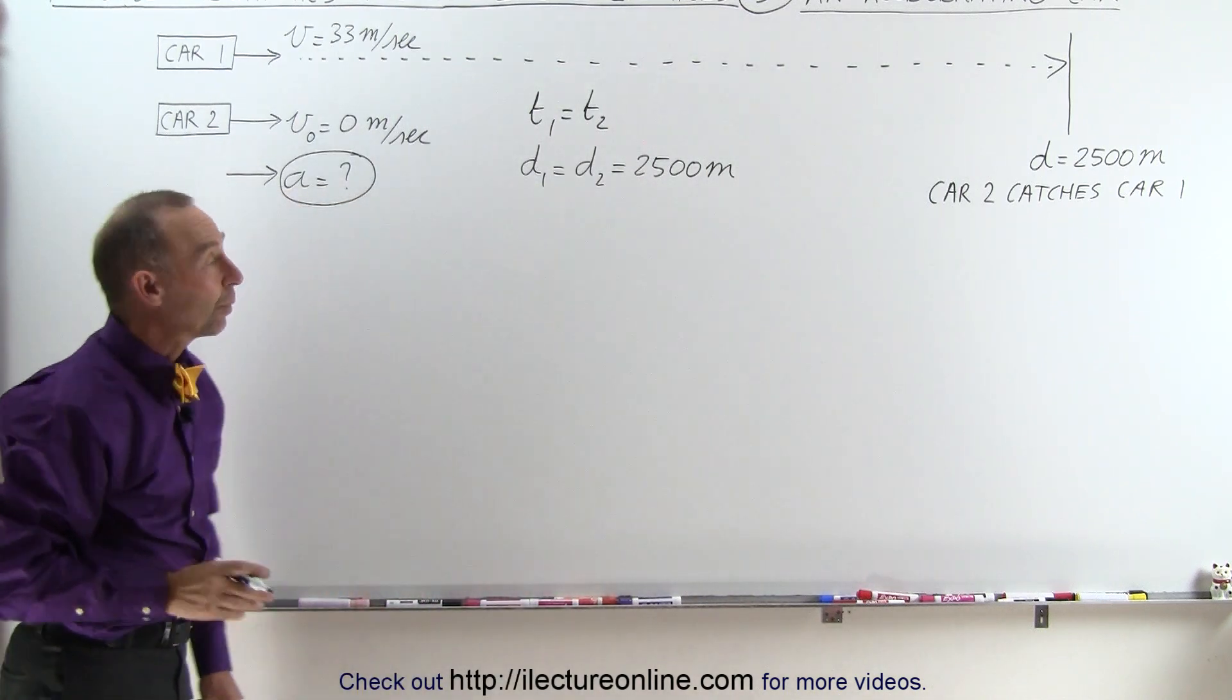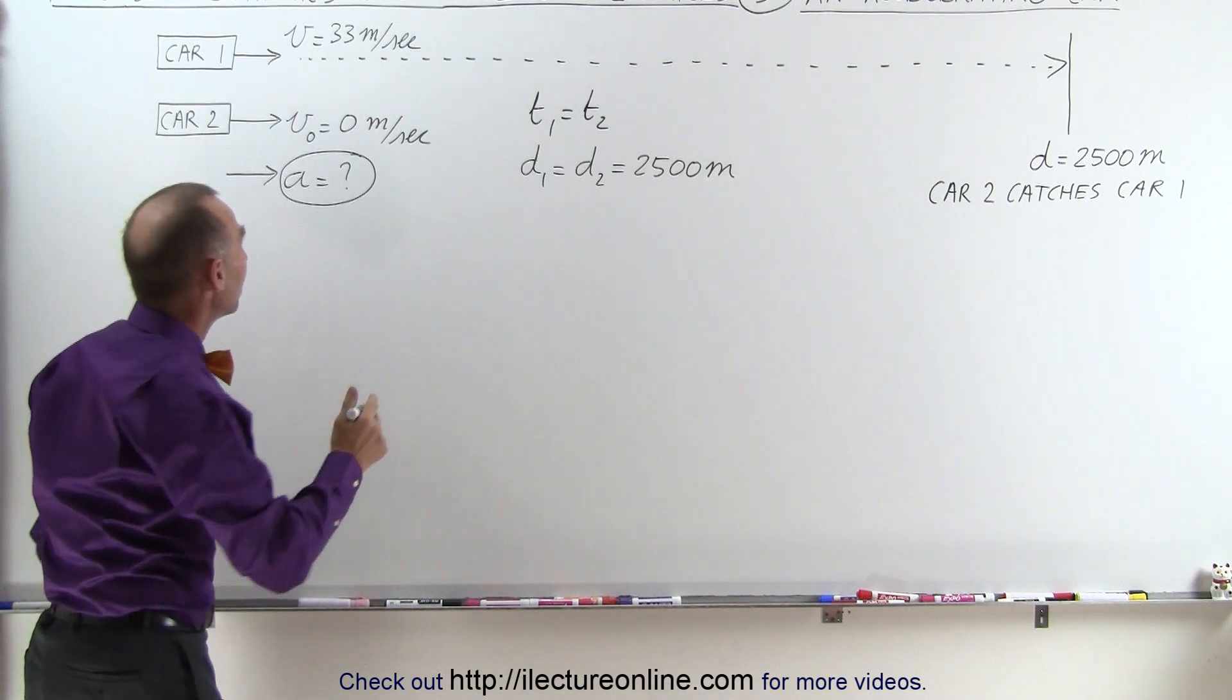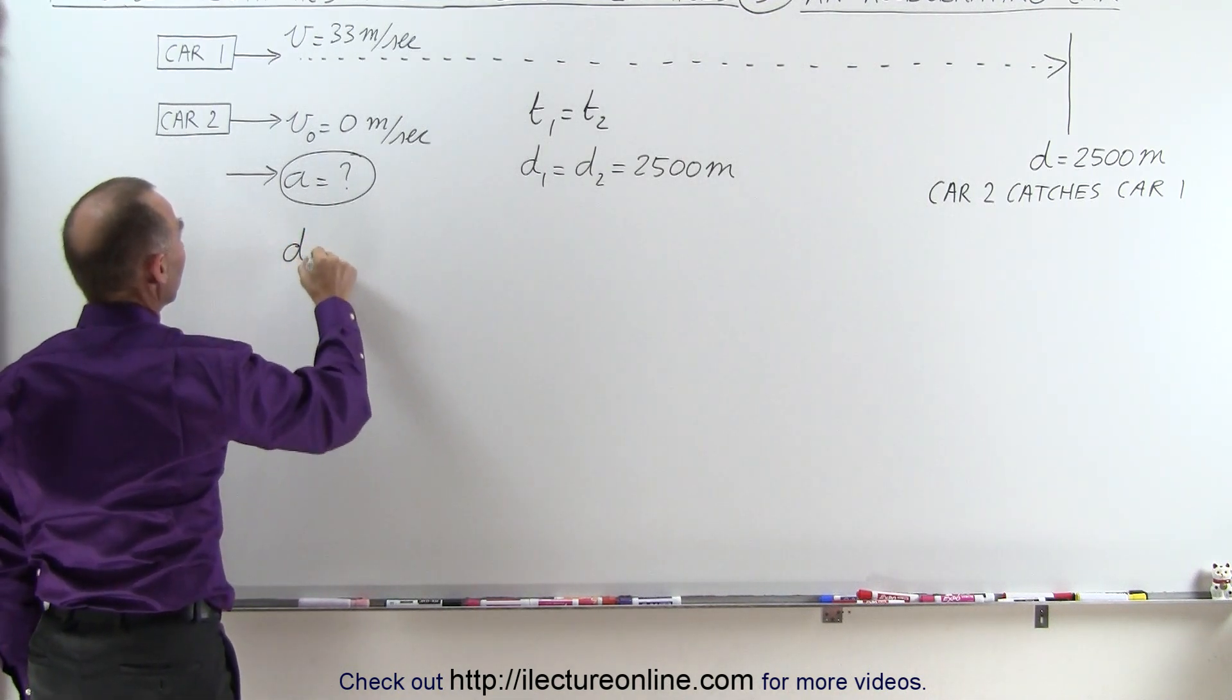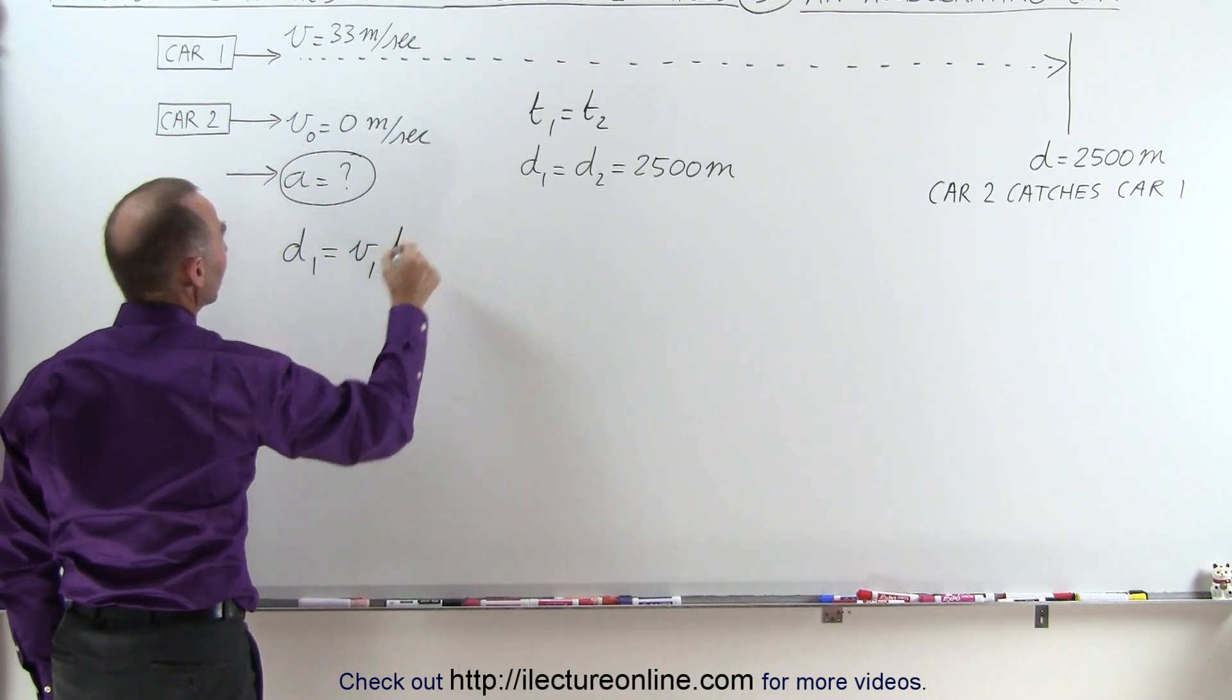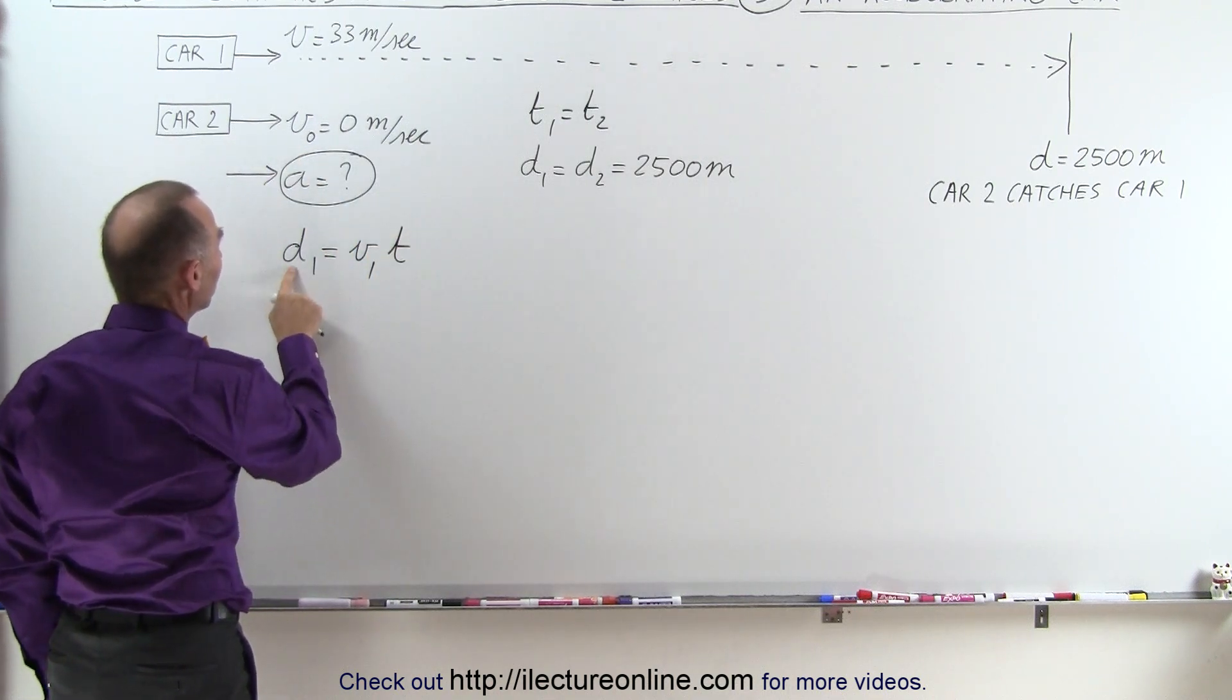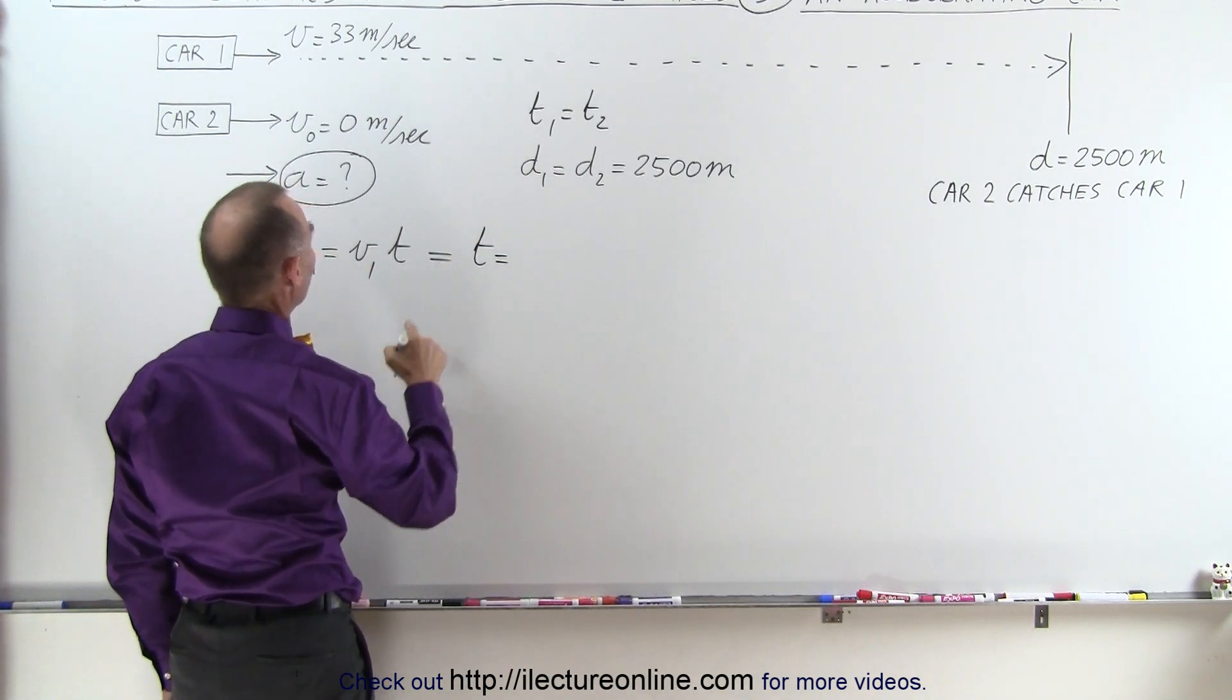So if that's the case, what we can do is solve for the distance traveled by both cars separately. We can say distance 1 is going to be equal to the velocity of the first car times the time spent, and we know the distance and we know the velocity, which means that in this case we can actually solve for the time.